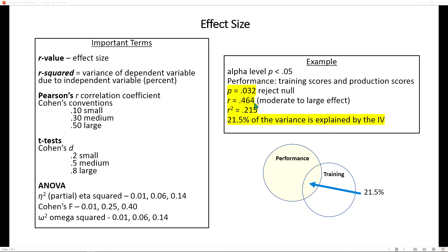And when we square that value we are at 0.215. So therefore, 21.5 percent of the variance is explained by the independent variable.